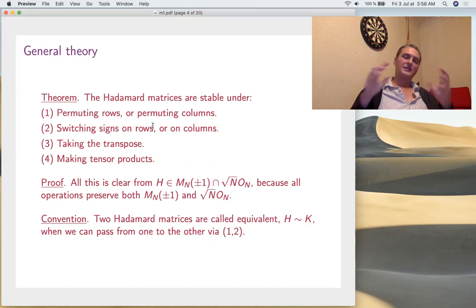When trying to classify Hadamard matrices, the natural idea is to mod out by some of these relations. The convention, the standard one, is to use operations one and two. Two Hadamard matrices are called equivalent if you can pass from one to the other by permuting rows, columns, or switching signs. The transpose is not included because it comes from the fact that the transpose of an orthogonal matrix is orthogonal, which is well known but quite deep. I cannot really see it from the definition - that's why the equivalence notion is like this.